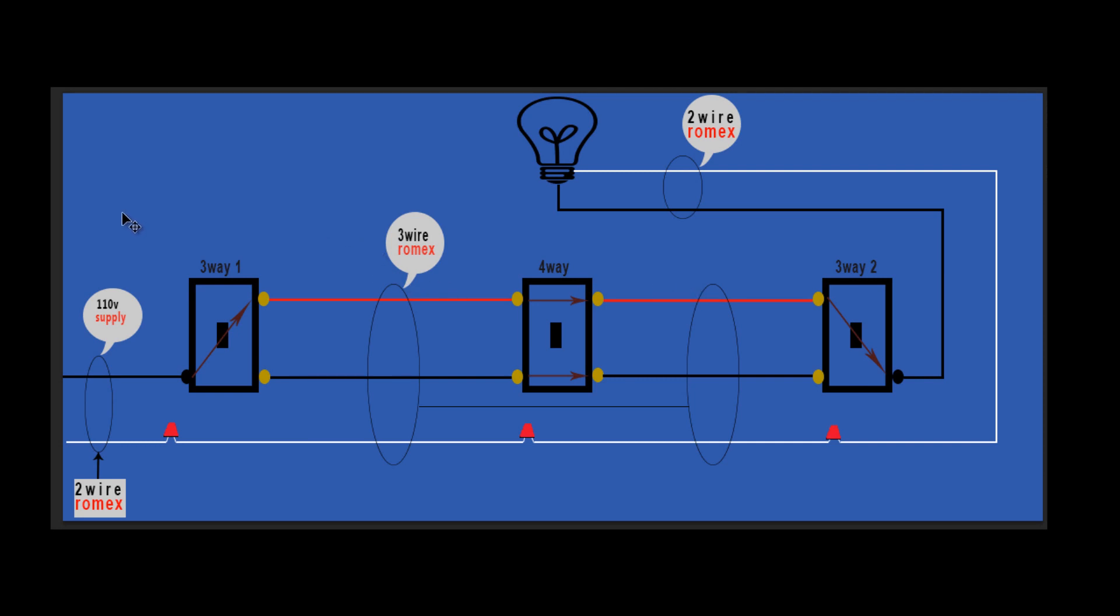What you want to do is visualize this as three different boxes that contain switches. The first box contains a three-way switch, which I aptly named Three-Way Switch 1. The second box contains a four-way switch. And the last box contains a switch that's the last three-way switch in the loop, which I call Three-Way 2.